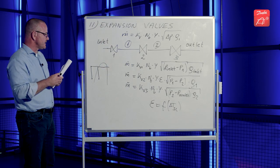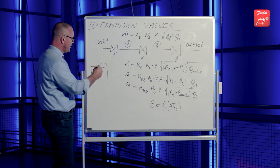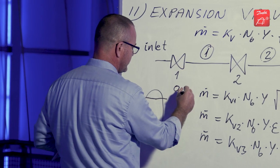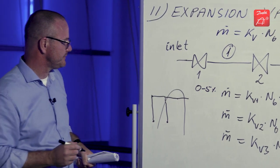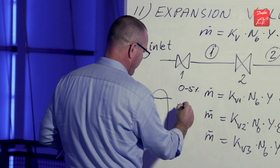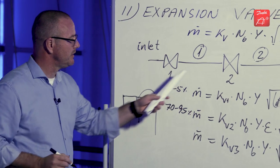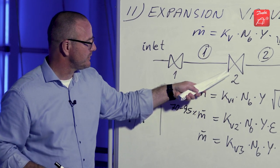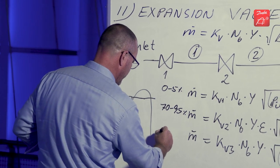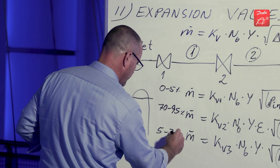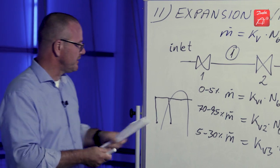Now, when you look at these equations, normally the pressure drop distribution is so that about 0-5% is on the first, the inlet valve. Then you have from 70 to 95% on the valve number 2, the main valve. And on the outlet, you have in the area of 5 to 30% of the pressure drop. So, that is approximately the distribution.